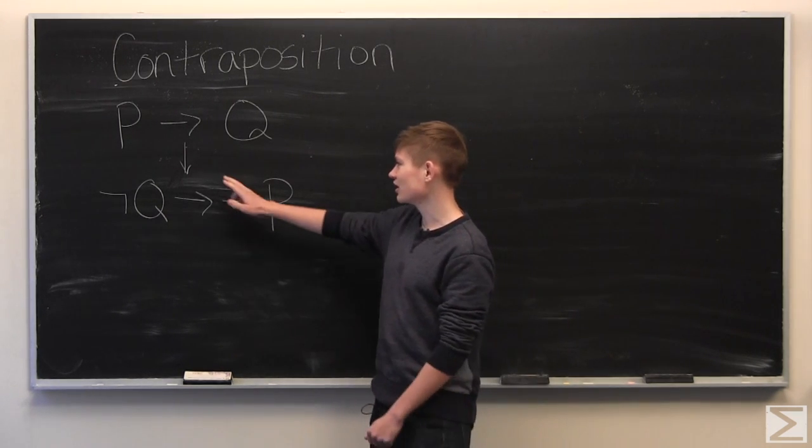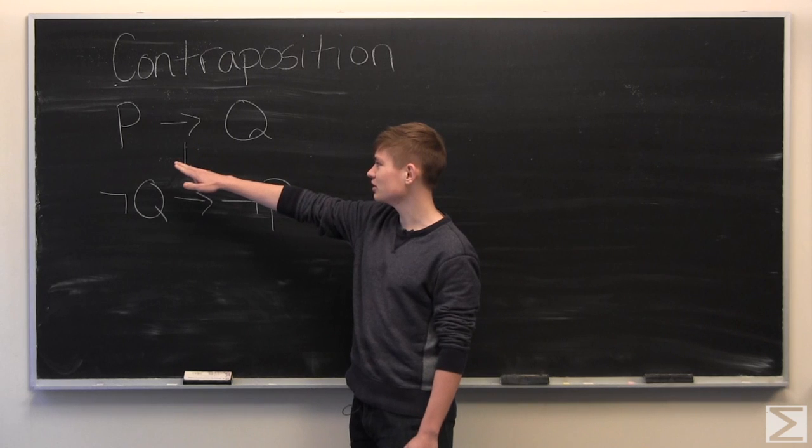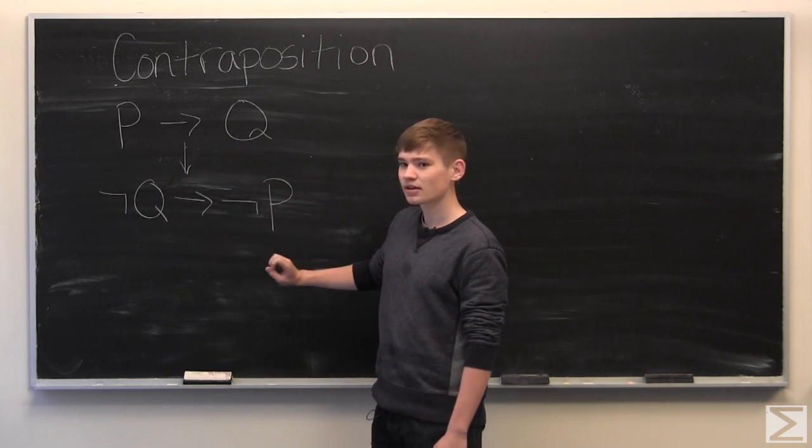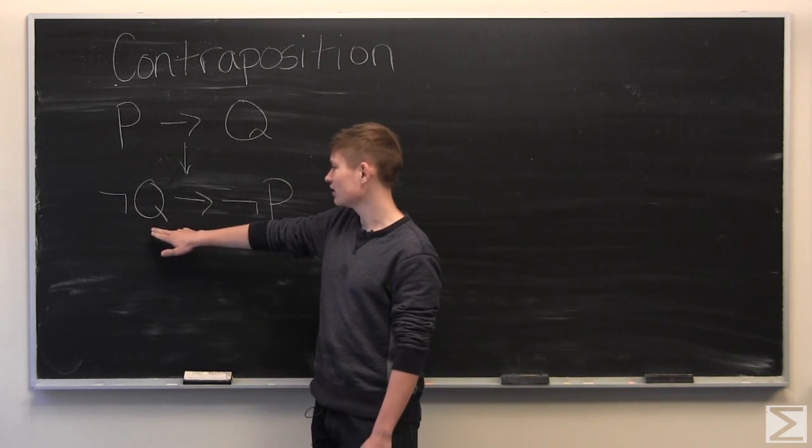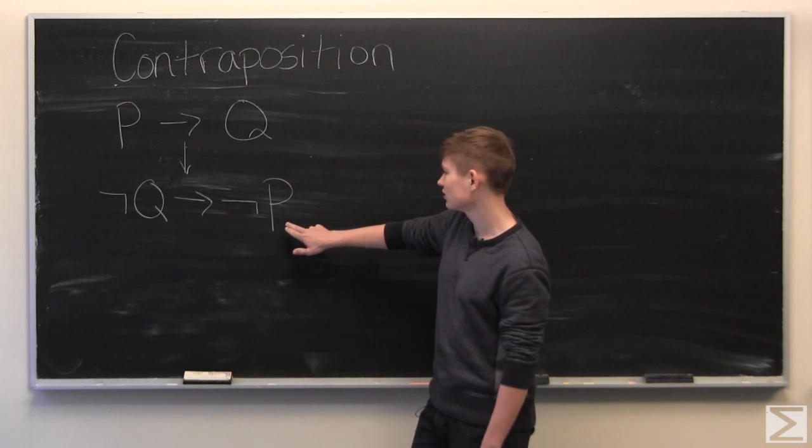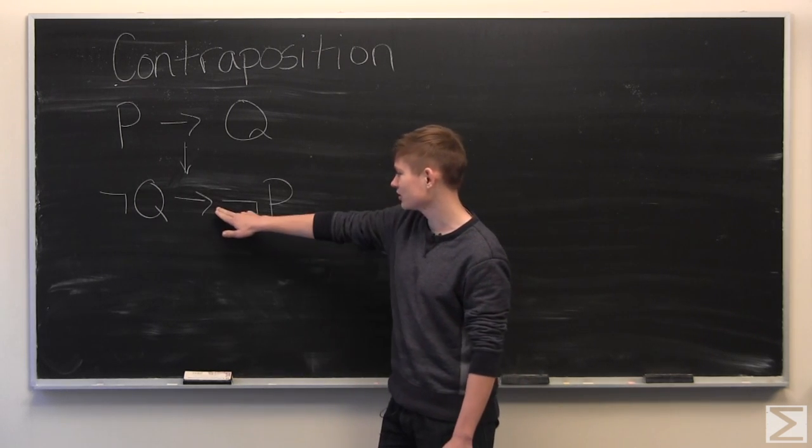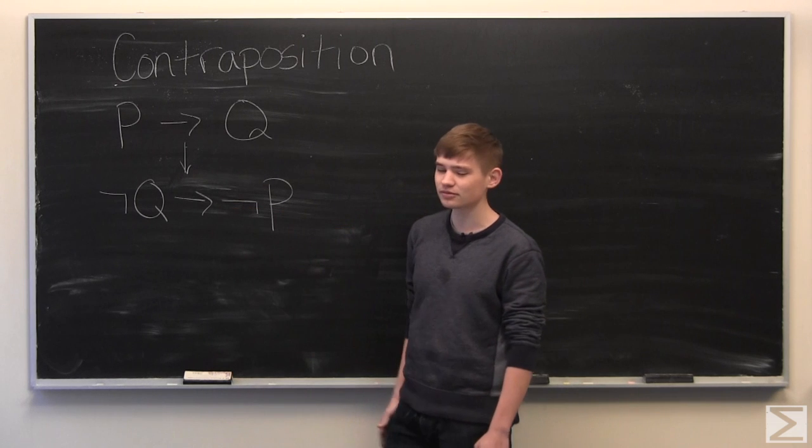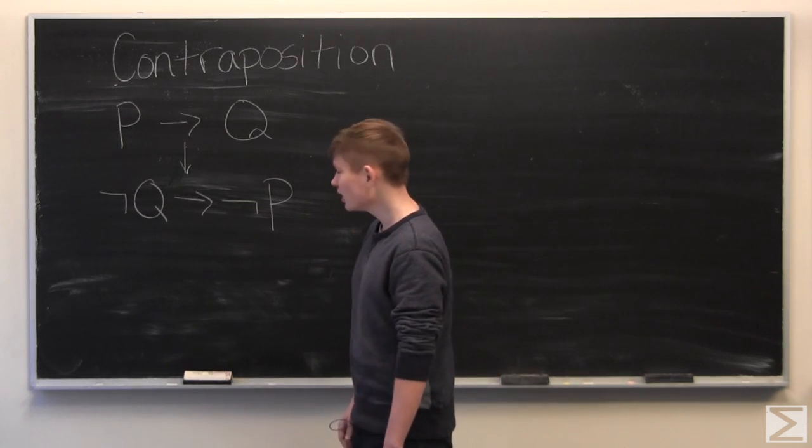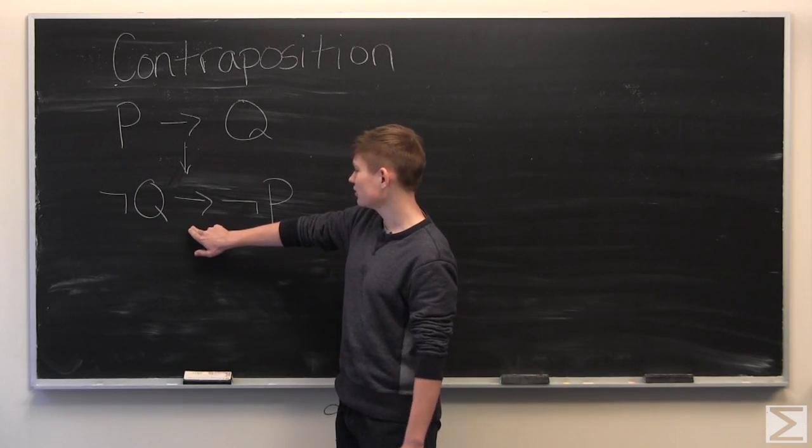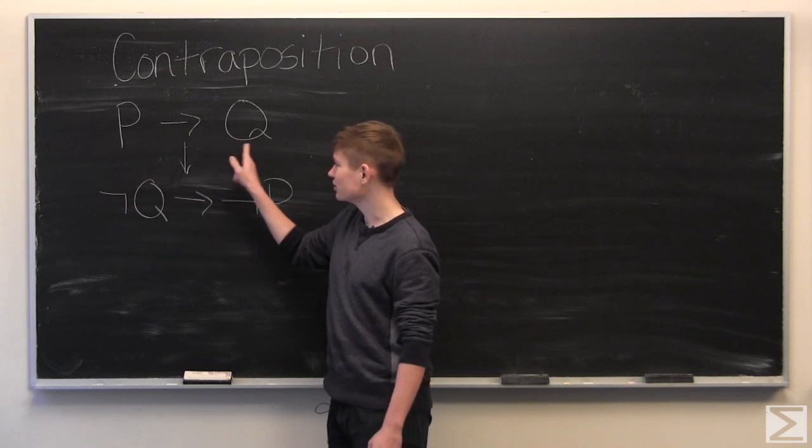The way contraposition works is that if you want to show that P implies Q, it is equivalent to showing that not Q implies not P, where these little symbols right here mean not. So, if you show it this way, you are also showing that P implies Q.